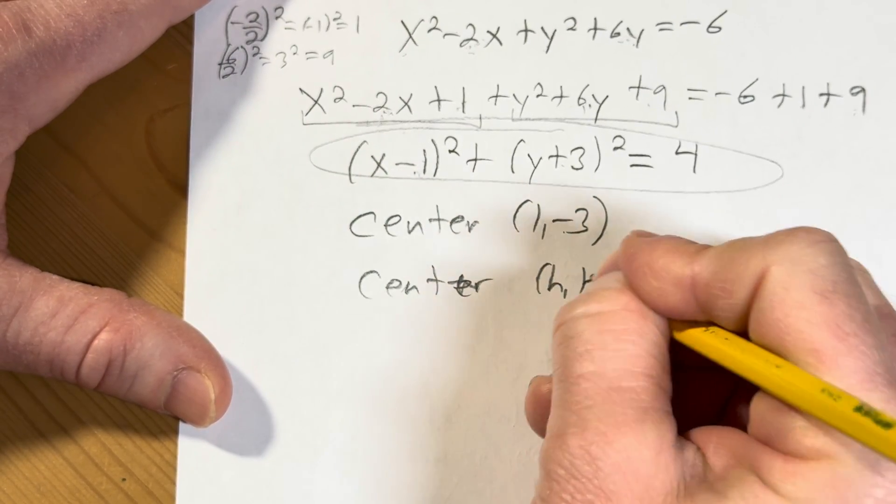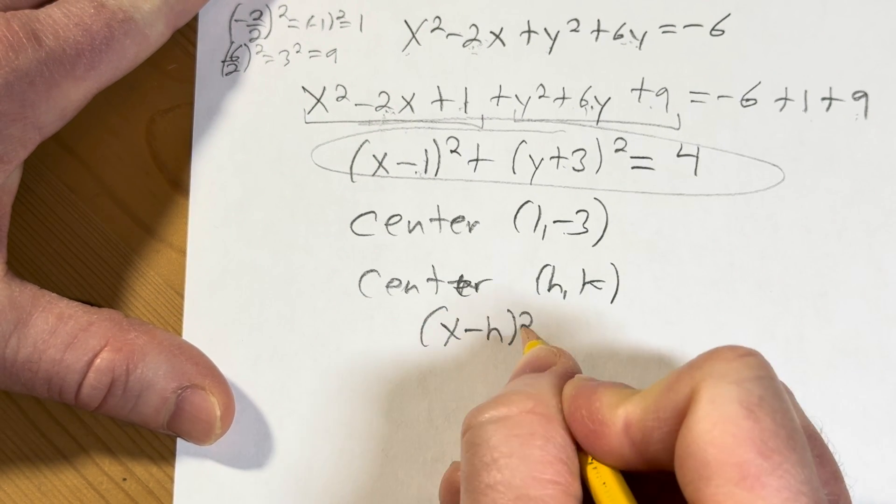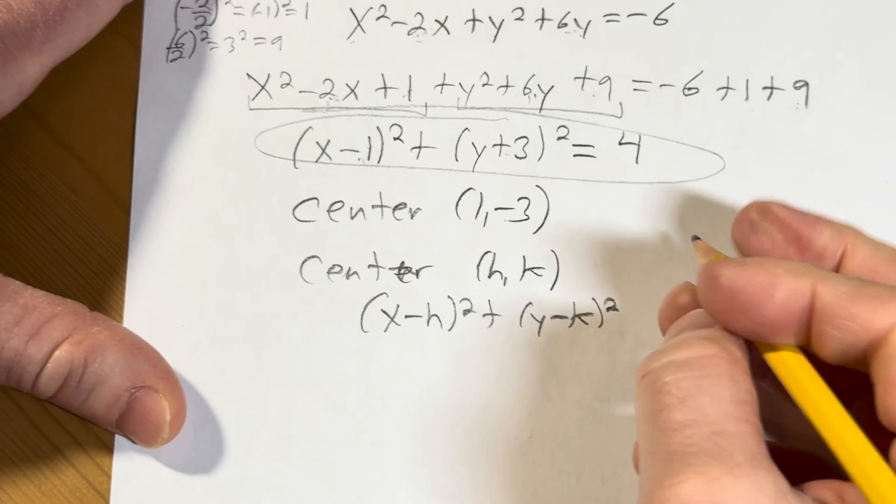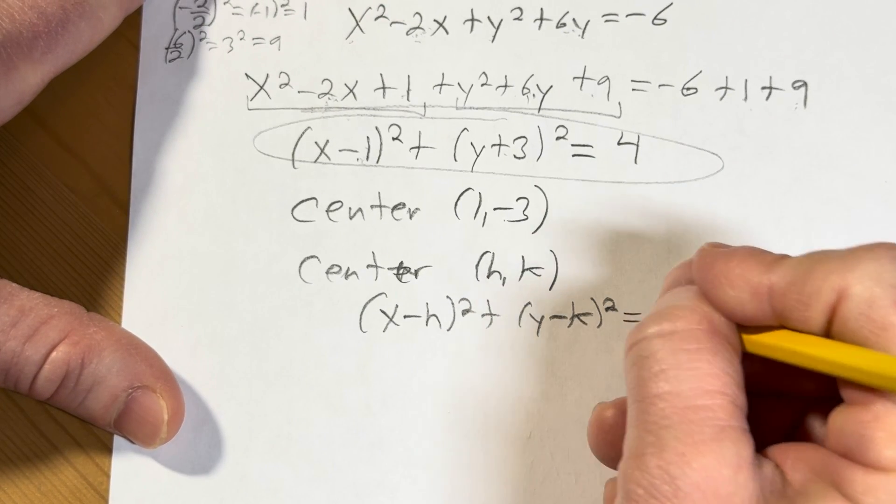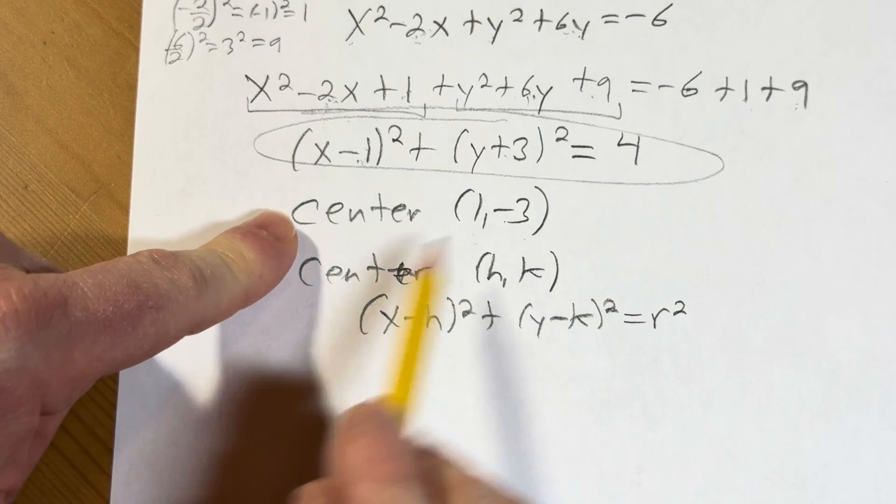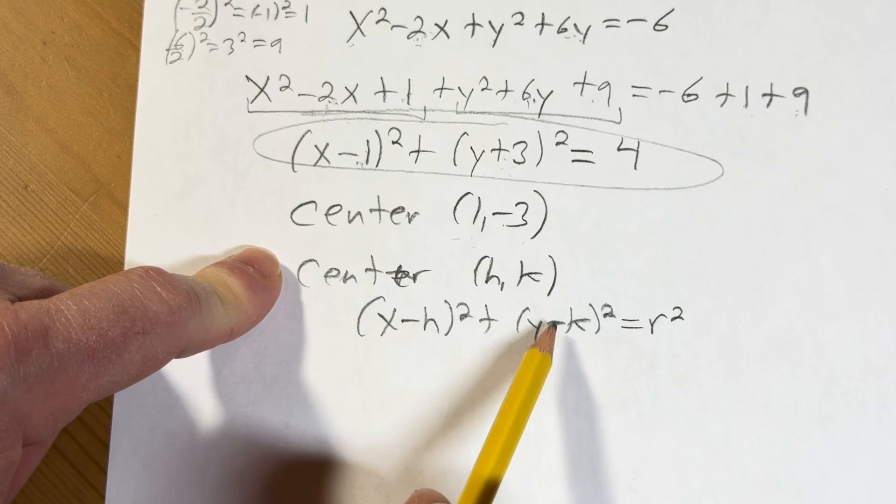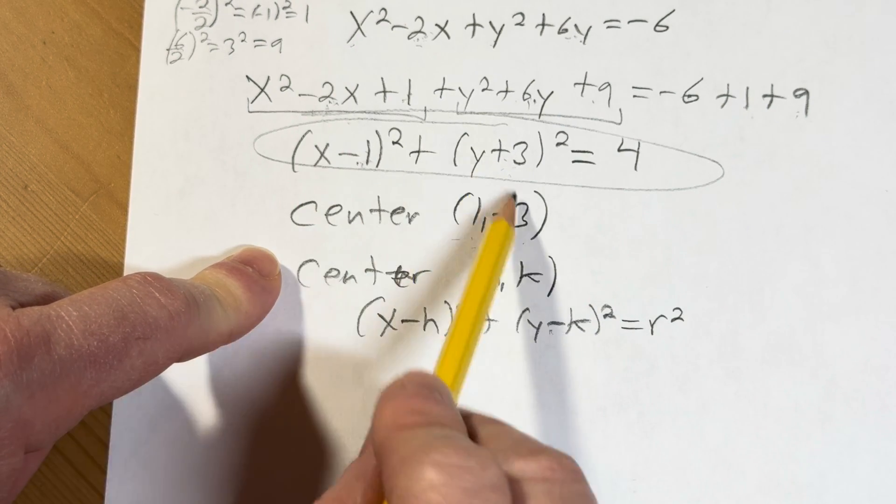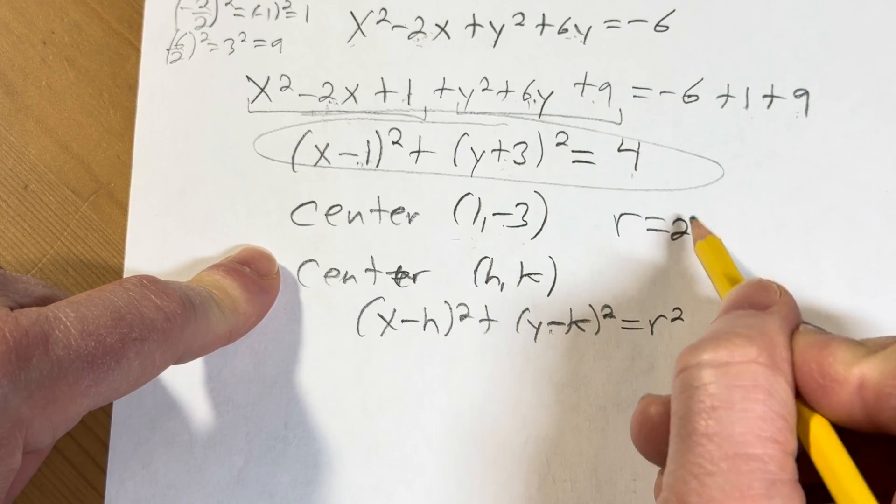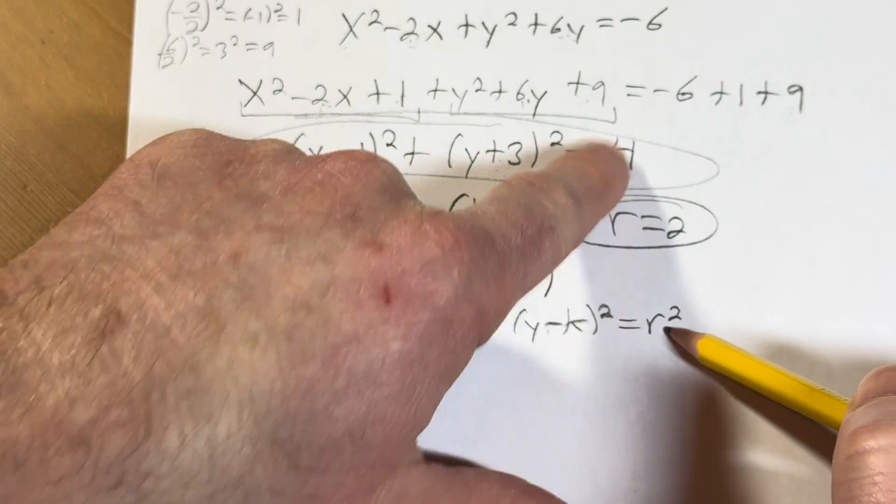Okay, so it'll be 1, negative 3. Okay, because the center is normally h, k like that, right? And the formula is this one: x minus h squared plus y minus k squared equals r squared. That's the formula. So your center is going to be h, k, so it's going to be 1, negative 3. You see there, there's your 1. Then I flip the sign here because it's a plus and it's a minus in the formula, so you just basically switch the sign. Then r is the square root of this number, so r is 2 because it's the square root of 4. See, r squared equals 4.